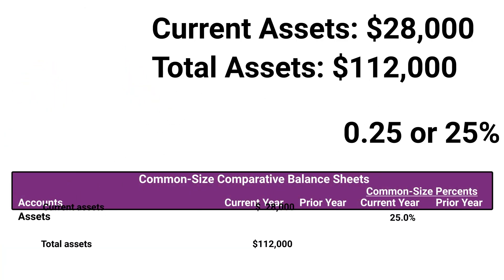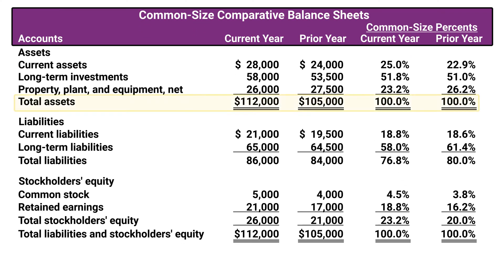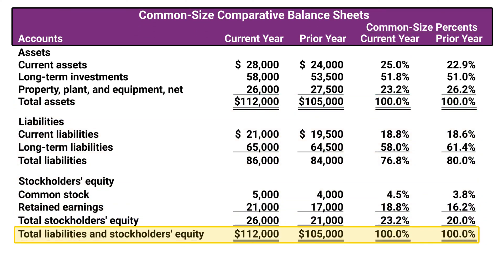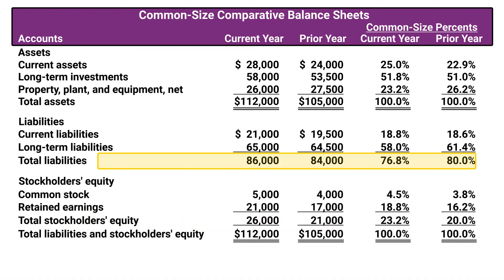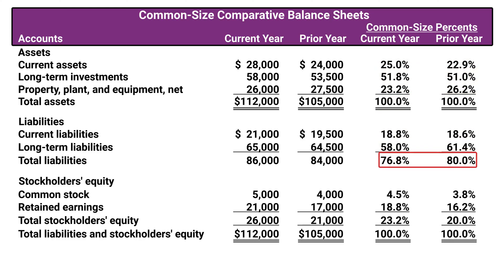We can do this common size computation for all balance sheet items using total assets or total liabilities plus equity as the base amount for the current year and the prior year. Looking at the common size percentages, we see that current assets are 25% or less of this company's total assets for both years. We also see that the company is mainly financed with liabilities.